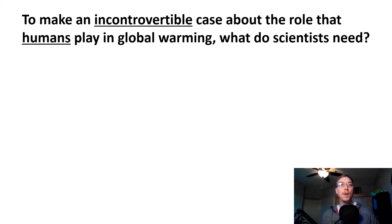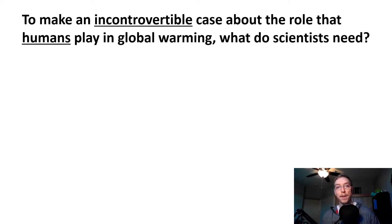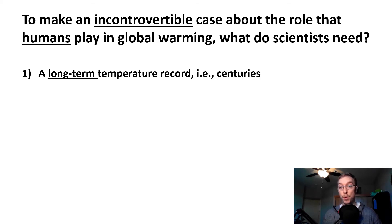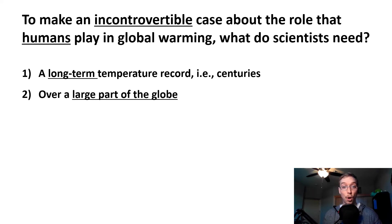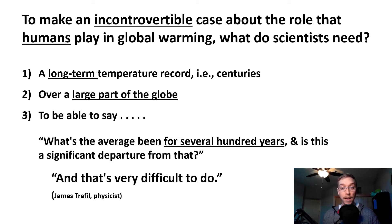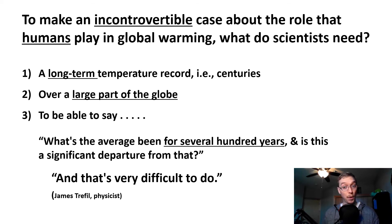Why do we want to do this? Because we need to make an incontrovertible case about the role that humans play in global warming. At the end of the day, we are faced with a global problem: anthropogenic climate change. What do scientists need to make an incontrovertible case? A long-term temperature record, centuries in the making, over a large portion of the globe, so that scientists can establish what the average has been for several hundred years and whether what we are experiencing now is a significant departure from that. As physicist James Trefil says, it's very difficult to do.